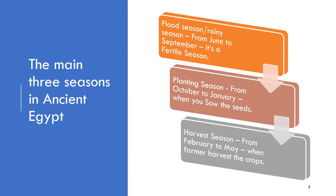The main three seasons in Ancient Egypt. Flood season, or rainy season, from June to September - it's a fertile season. Planting season from October to January when you sow the seeds. Harvest season from February to May when the farmer harvests the crops.